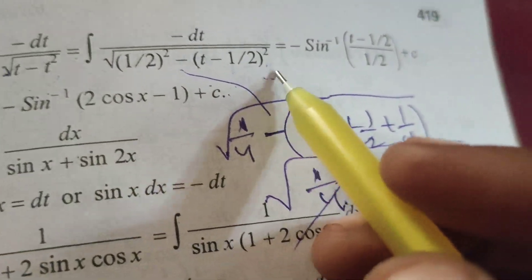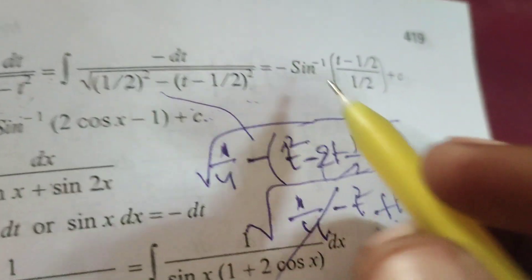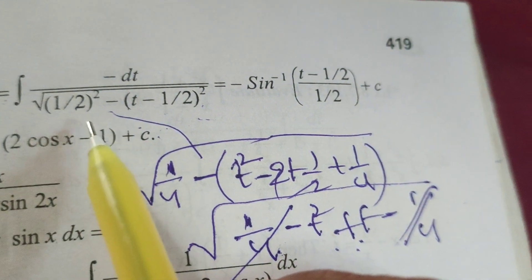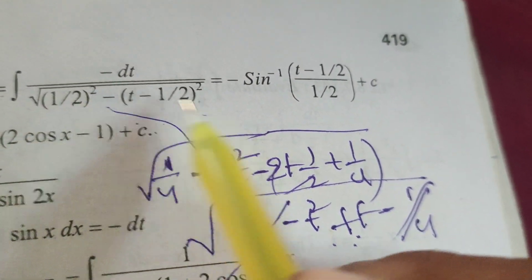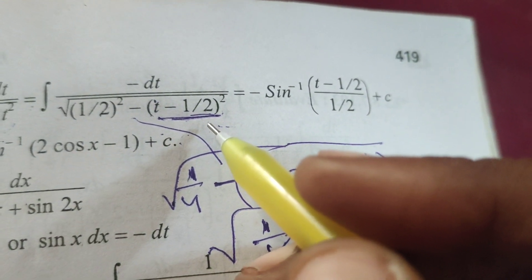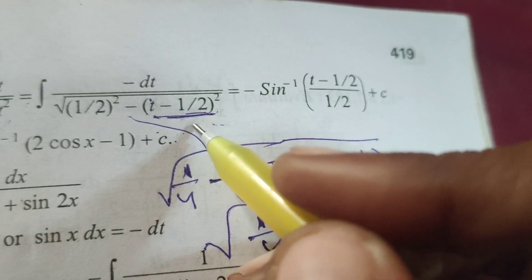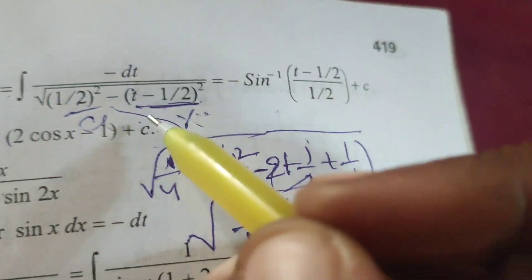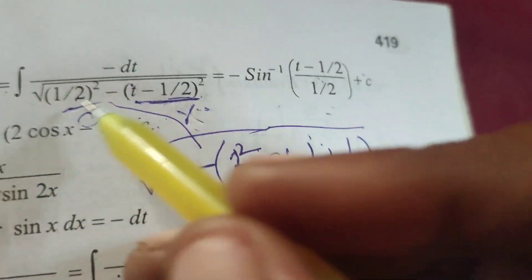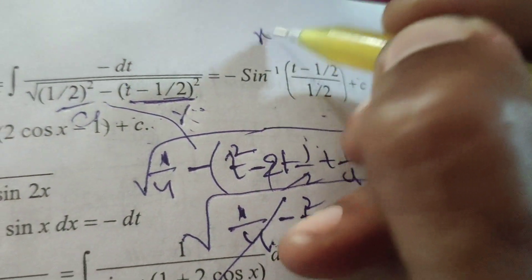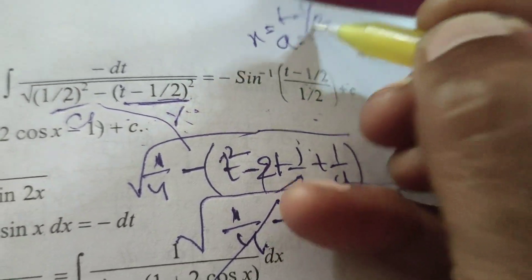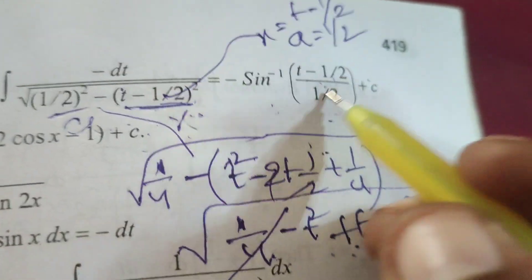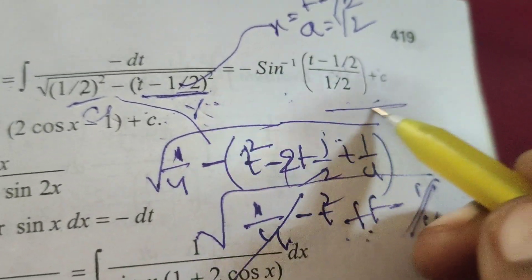Splitting as (1/2)² minus (t minus 1/2)², now apply the formula for root of a² minus x²: the integral equals sine inverse of x by a, where x means t minus 1/2 and a means 1/2. Therefore the result is minus sine inverse of (t minus 1/2) divided by (1/2), plus constant C.